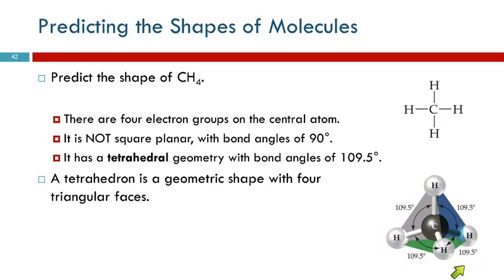Another way to think of this is that it's like a triangular pyramid, but the word we use is tetrahedral. Tetra is a prefix that means four. It's a geometric shape with four triangular faces. We're familiar with cubes, which have six square faces — this is four triangular faces.